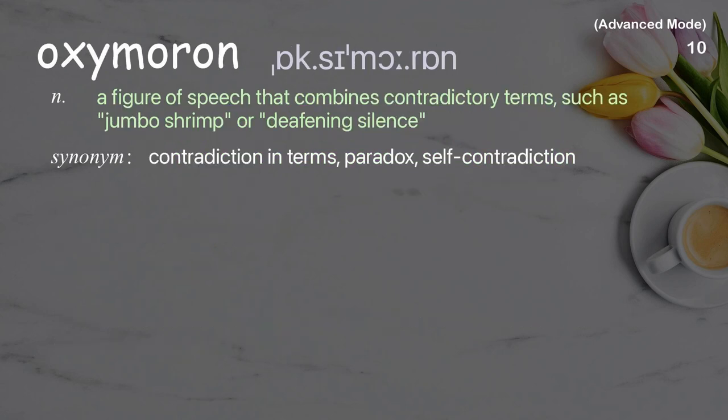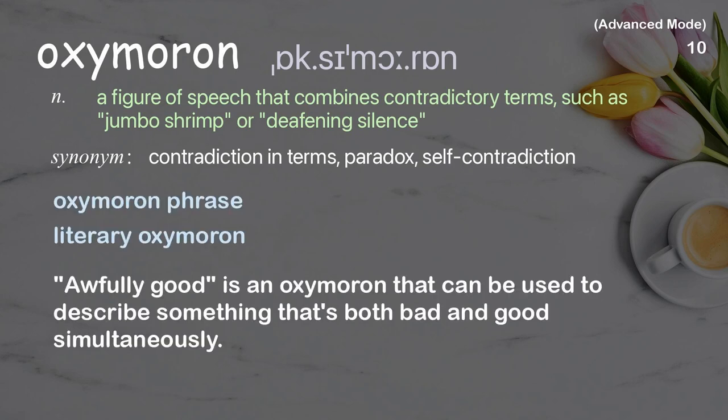Oxymoron: a figure of speech that combines contradictory terms, such as 'jumbo shrimp' or 'deafening silence.' Examples: oxymoron phrase, literary oxymoron. 'Awfully good' is an oxymoron that can be used to describe something that is both bad and good simultaneously.